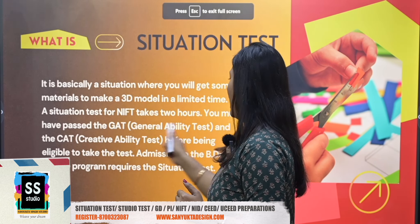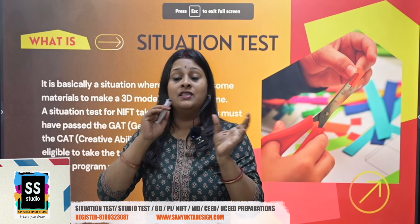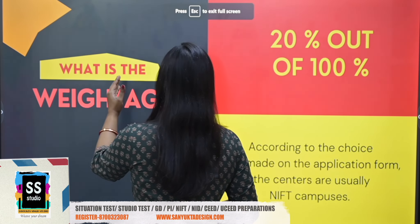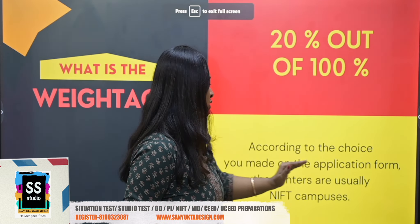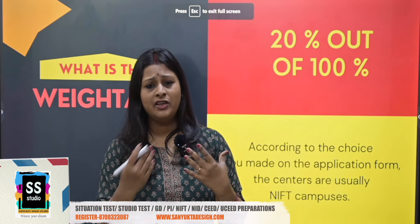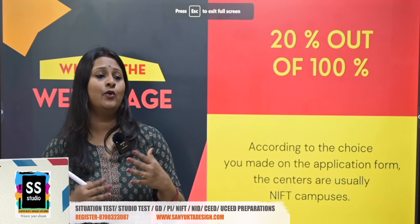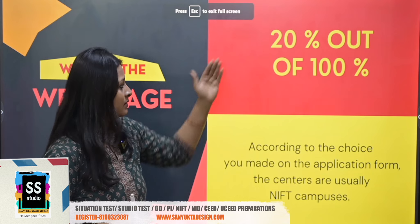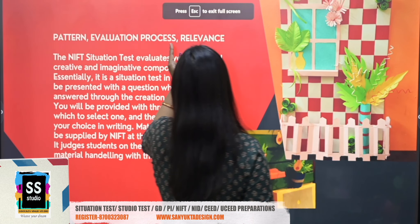For GAT and CAT results which come out of the first round, the notification you will get on screen will state that you have been shortlisted for the second round, so that you can be prepared for the situation test. The weightage is 20% out of 100%. According to the choice you made on the application form, the centers are usually the NIFT campuses. A question I get every year is: where will the center be? NIFT campuses are going to be your center. Wherever you are, there will be some NIFT campus in the nearby city or state. You can choose that campus and go there to appear for the situation test.